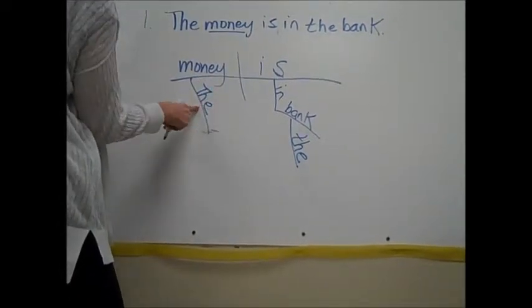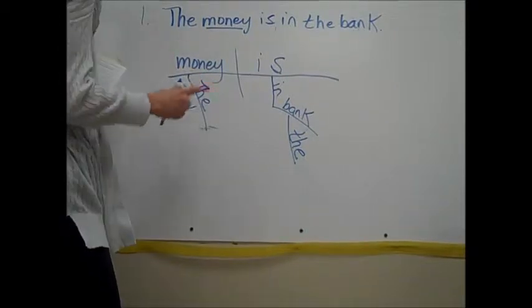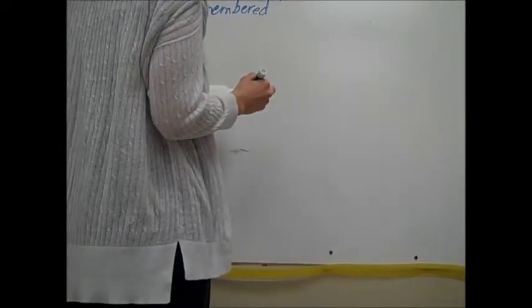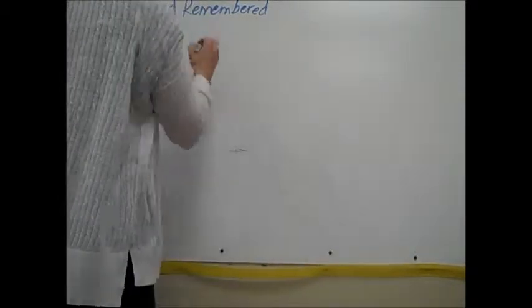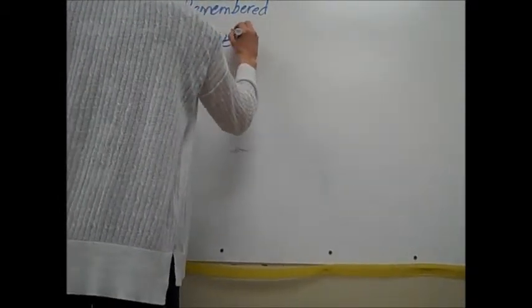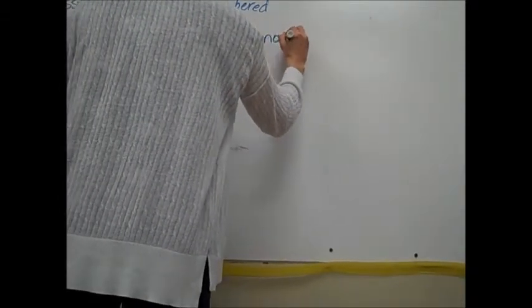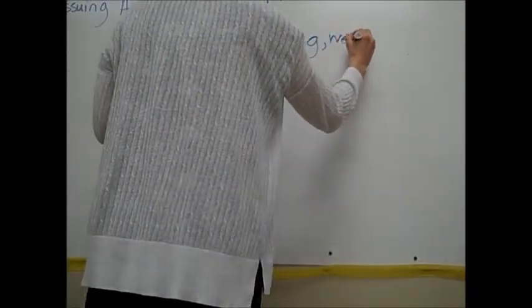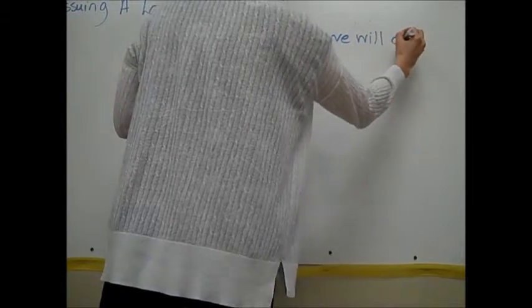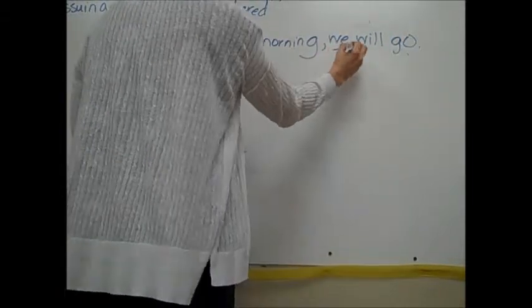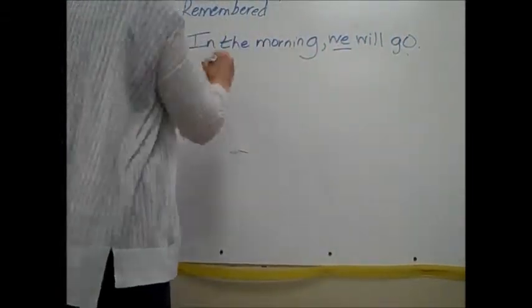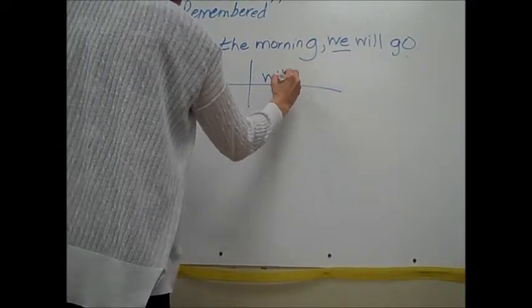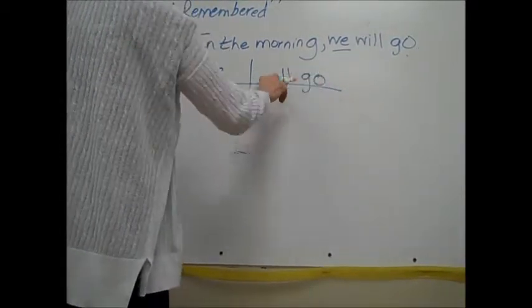That's number one. Number three: 'In the morning we will go.' So 'in the morning' is obviously going to be our prepositional phrase. 'We will go' - our subject is 'we', that's who's doing the action in the sentence. 'We will go', 'we'll go' - this is our predicate verb phrase right here.